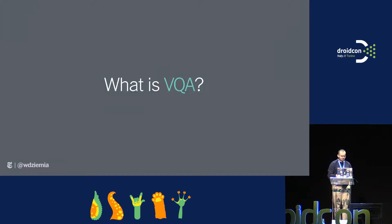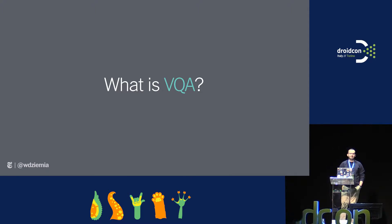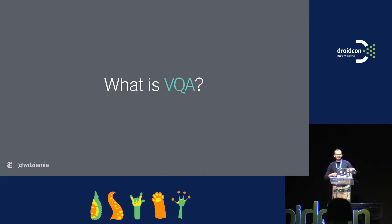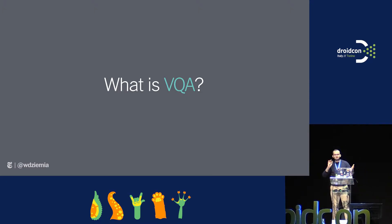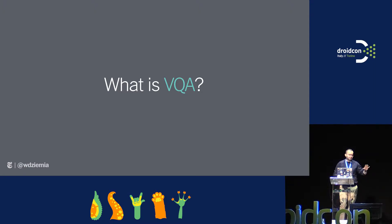So, straight to the point: what is VQA? Visual Quality Assurance. As you're writing standard code, if you're lucky, you have a QA department, some QA engineers to help you test that code. You'll have unit tests and integration tests, but they're kind of like the last line of defense. VQA needs that sort of framework as well. QA will usually use Appium or Espresso and write their own tests.